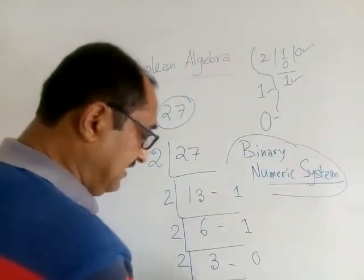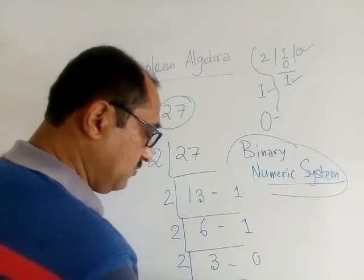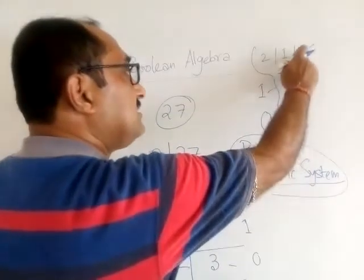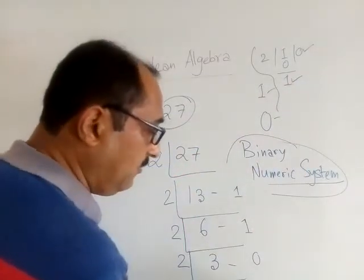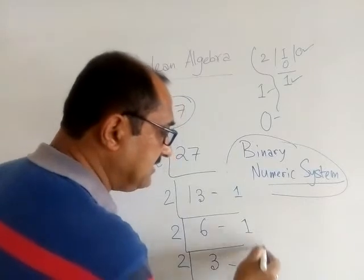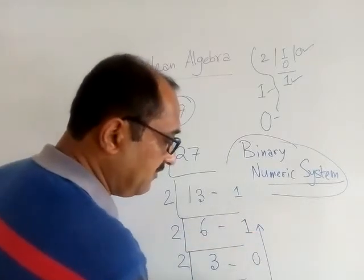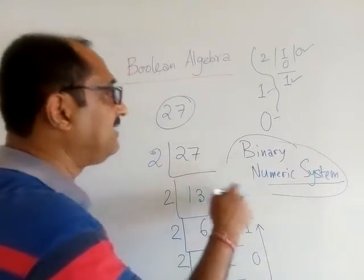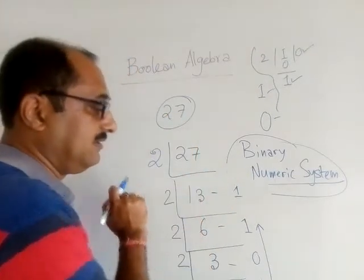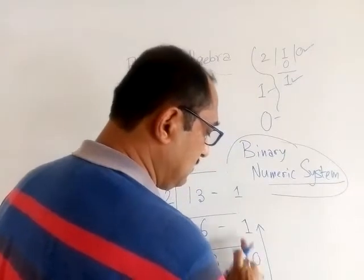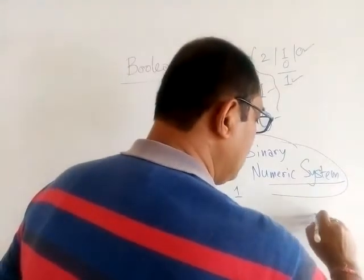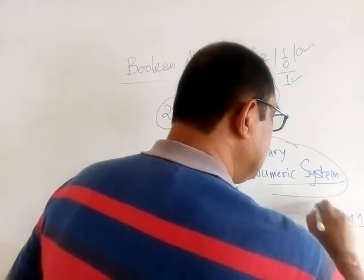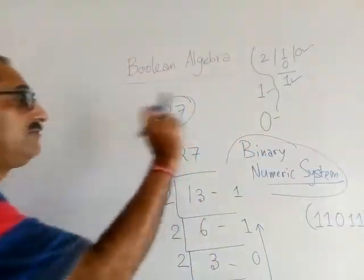So basically if I divide here this one once again, my quotient will be 0 and remainder will be 1. What we got? Quotient is 0, remainder is 1. Now if I write all these digits, look at this, in the form of remainder whatever we got from bottom to top, then I will be able to represent 27. That means if I write, look at this, one one zero one one. So if I write 11011, this is basically the equivalent number of 27.